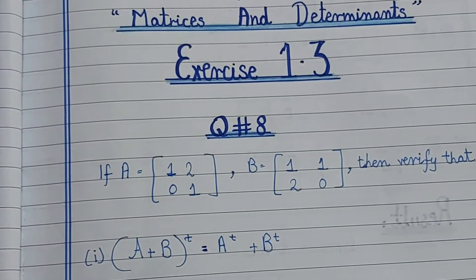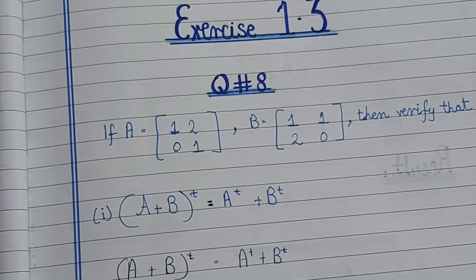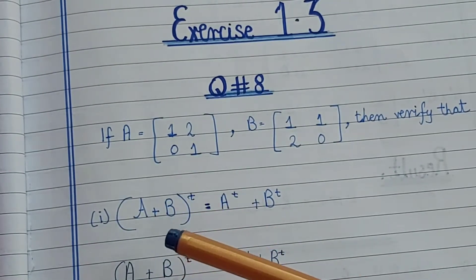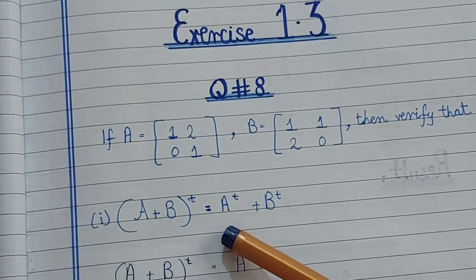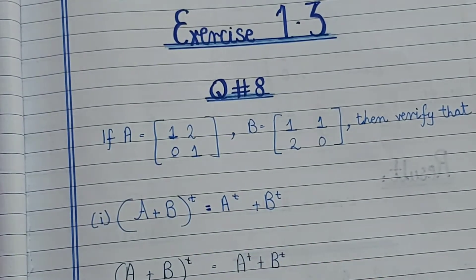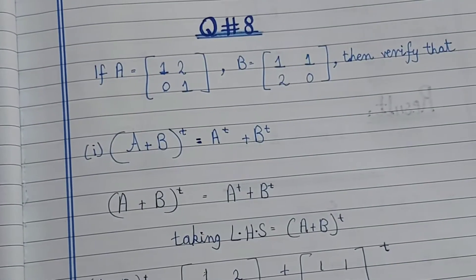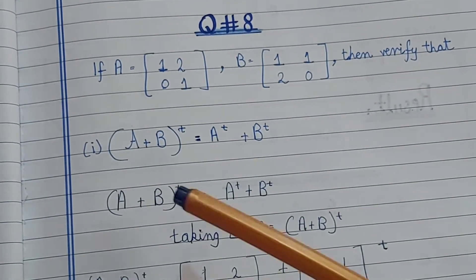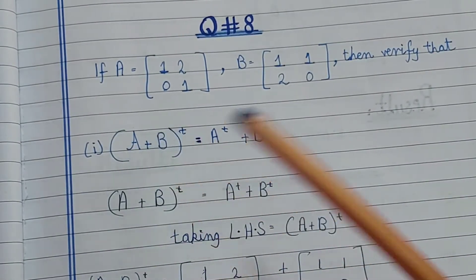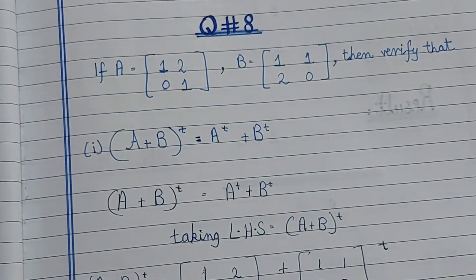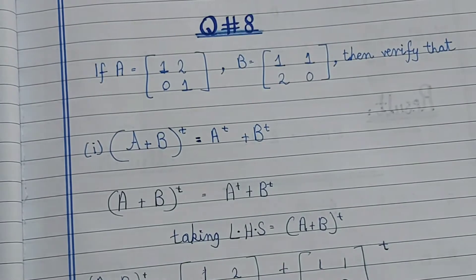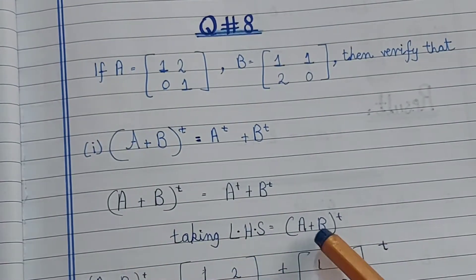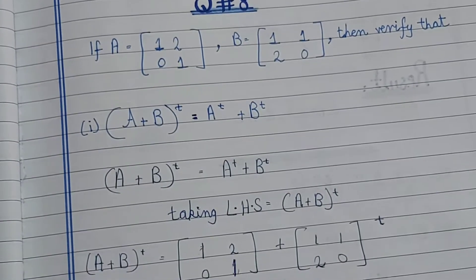The first part asks us to verify that (A + B) transpose is equal to A transpose plus B transpose. Now I will solve this. First I will use left-hand side, then right-hand side. Taking the left-hand side, which is (A + B) transpose.